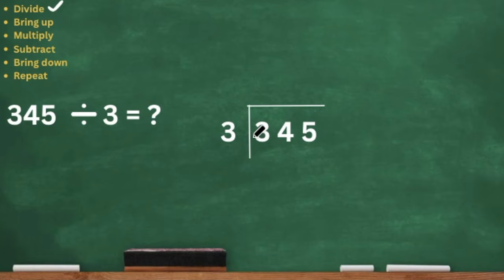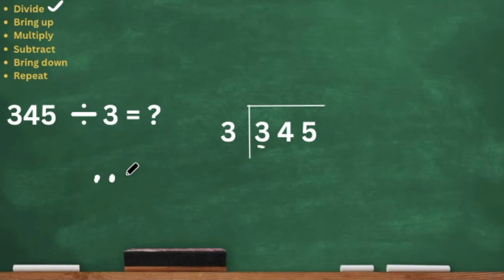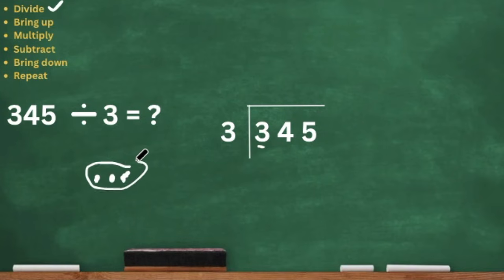So your first digit in your dividend, which is inside of that little halfway cutout box, you have to ask yourself: how many groups of my divisor — my divisor is also 3 — how many groups of 3 can I get out of 3? We're going to do 3 dots, which represents our first digit in our dividend, and see how many groups of 3 we can get. That's one group of 3, so the answer will be 1.